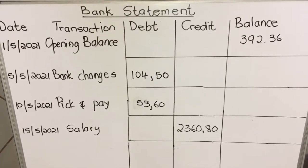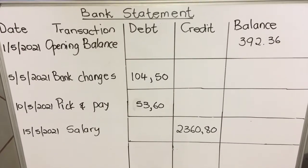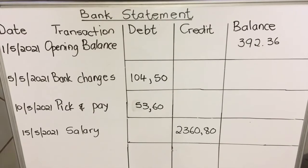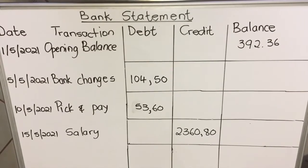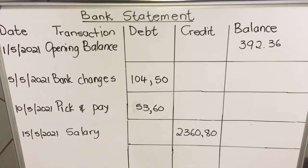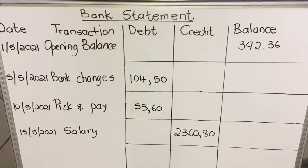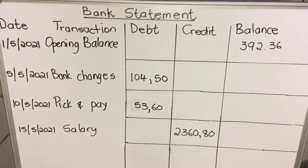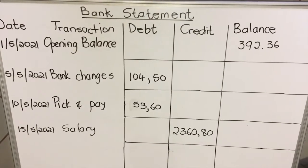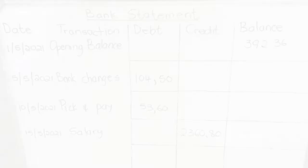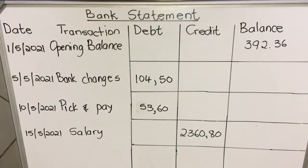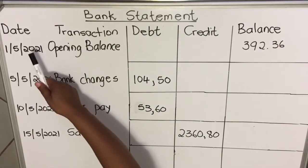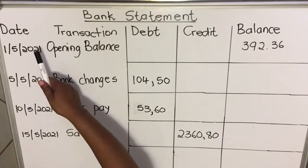In a bank statement, it will show the bank's name and logo, and write the person's account details and all of that. But what I want us to do is to look at the terminology that is used in the bank statement. On your bank statement you'll have a date, meaning it will be the date of the transaction that has happened.